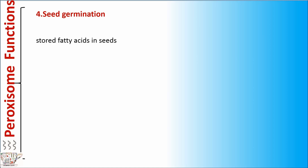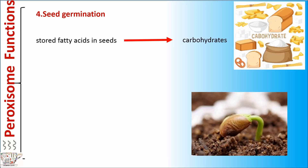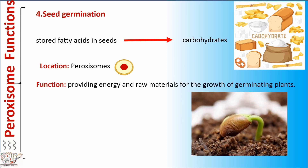Function number four: seed germination. During seed germination, stored fatty acids in seeds form carbohydrates. This is a glyoxisome proxysome. It plays a role in providing energy and raw materials for the growth of germinating plants.